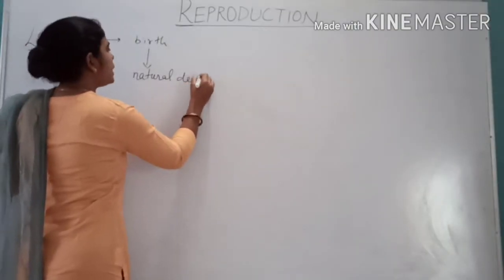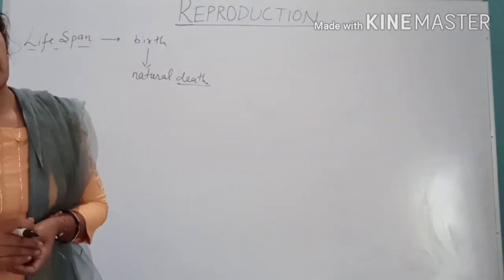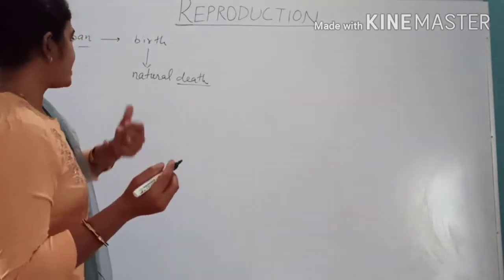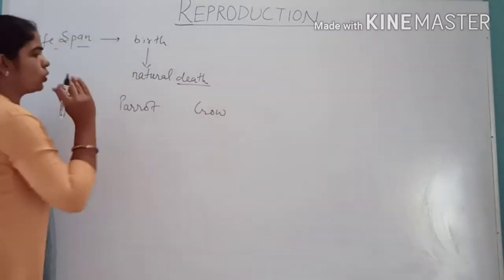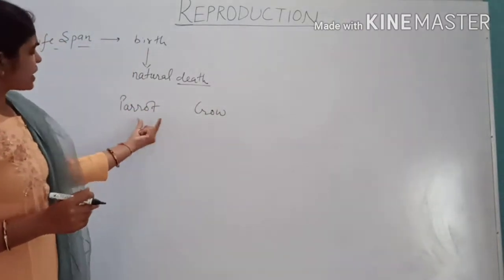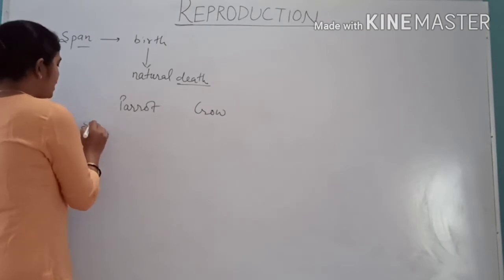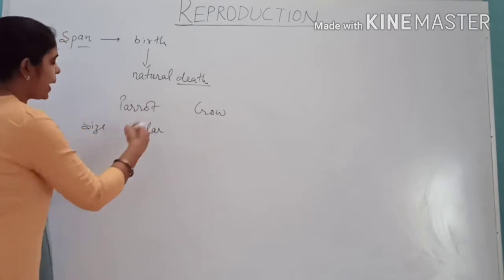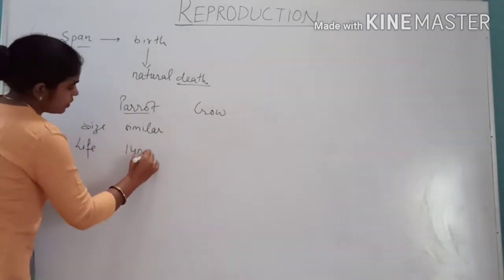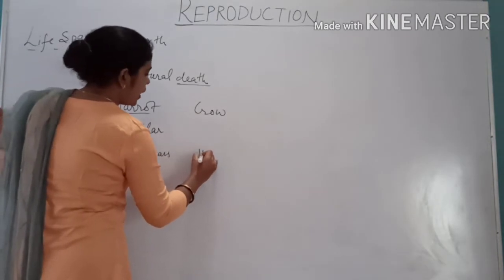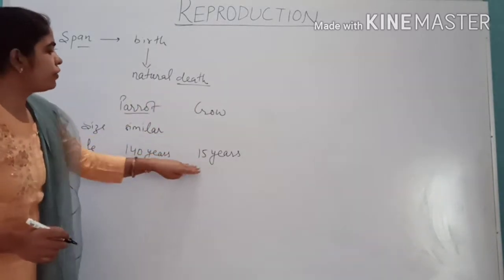The lifespan of an organism is related to their size — or is it? We will see two examples: the parrot and the crow. Both the parrot and the crow have a comparable size. But if you look at their lifespan, the parrot lives for 140 years while the lifespan of the crow is only 15 years. So both these organisms have a similar size, but their lifespan differs a lot.